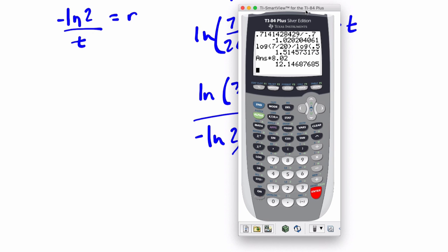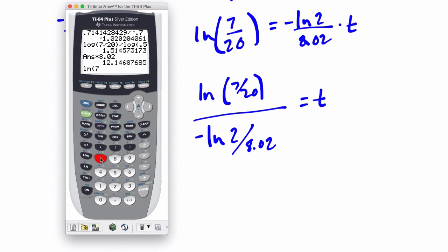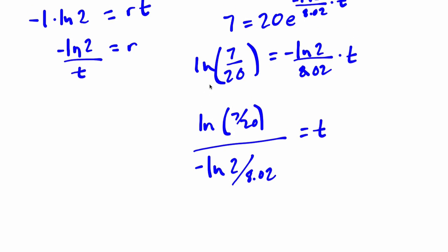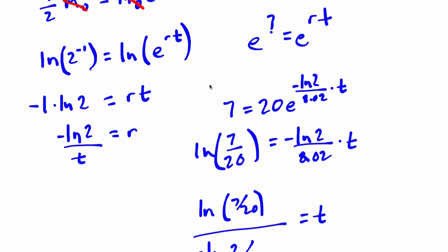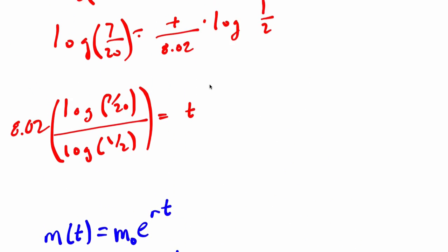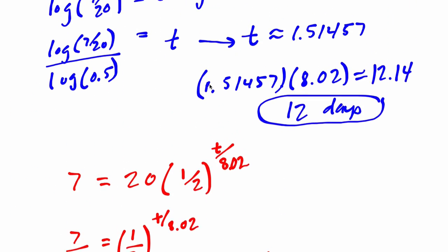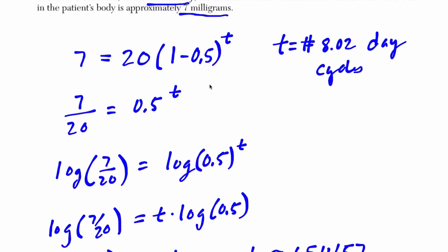Now just to confirm that they're not crazy, and if you didn't like this one, I will show you that these are equal. So the natural log of 7 divided by 20 divided by the negative natural log of 2 divided by 8.02, and here I get about 12.14. Same number. So you can approach this in a multitude of ways. Using E is going to be useful in general calculus, so you might as well start playing with it now. It's one way. And then these two other ways just use common approaches to exponential functions to understand half-lives. Alright, I hope this helps.